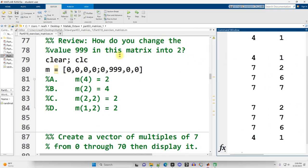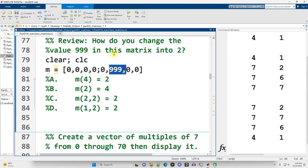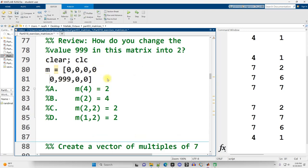Multiple choice here. How do you change the value 999 in this matrix into two? And there could be more than one answer. Now, one way to help us answer this is this semicolon right here means move down to the second row. So it's the same as this matrix right here. And we could even line up the commas, make it a little bit easier to read. And so then we see, ah, this 999 is in row two, column two.